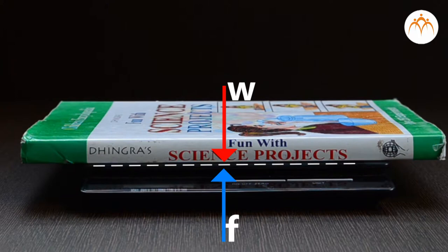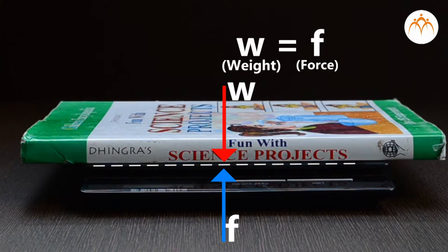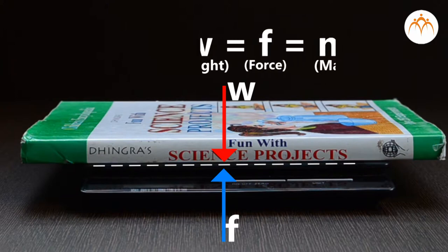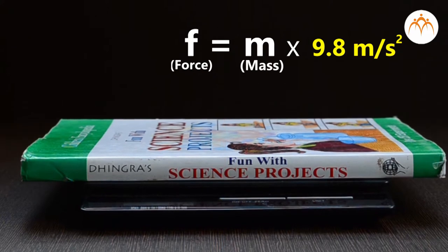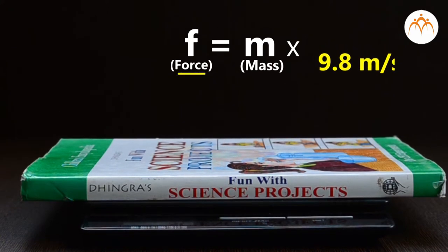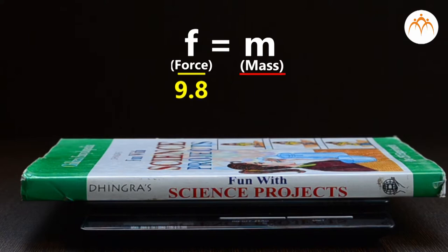Since the book is not moving, we can say that both forces are equal. We know that this force is equal to the mass of the book multiplied by G, the acceleration due to gravity. The generally accepted value of G is 9.8 meters per second squared. These weighing scales are calibrated — this scale measures the force due to the book, divides it by 9.8, and calls it mass.